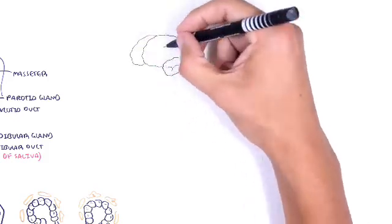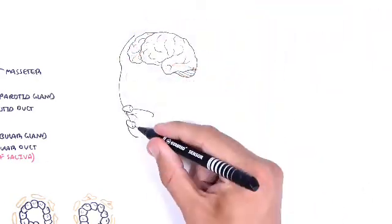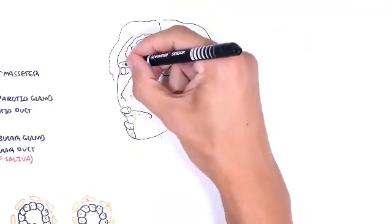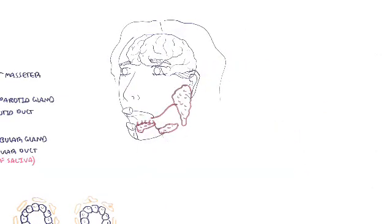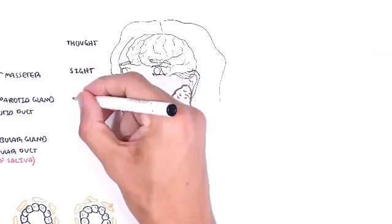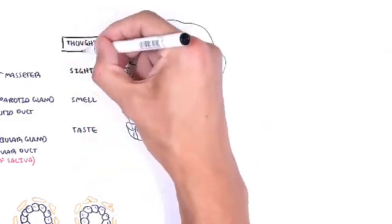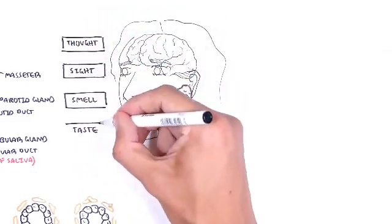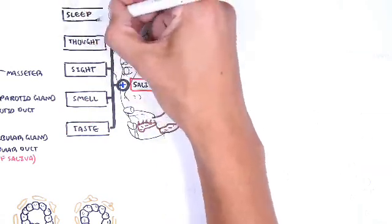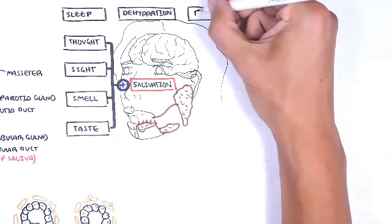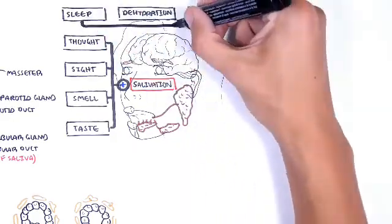Saliva is produced by the salivary glands, of which we have three pairs. So what stimulates saliva secretion? Salivation is stimulated by thought, sight, smell, and taste. Sleep, dehydration, fatigue, and fear all inhibit salivation.